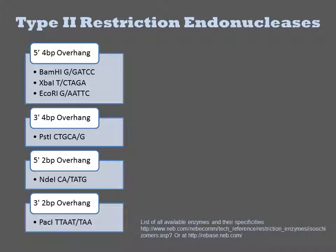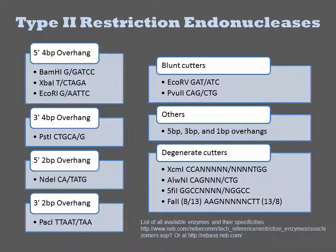The type 2 endonucleases vary in terms of the overhangs they generate and the sequences they recognize. They are defined by being sequence-specific enzymes. There are many enzymes that generate 5' 4 base pair overhangs, including BamHI, XbaI, and EcoRI. There are also commonly used enzymes that generate 3' 4 base pair overhangs. There are also many that generate 2 base pair overhangs either as 3' or 5' extensions. Some type 2s generate blunt ends, while others generate 5', 3', or even 1 base pair sticky ends.